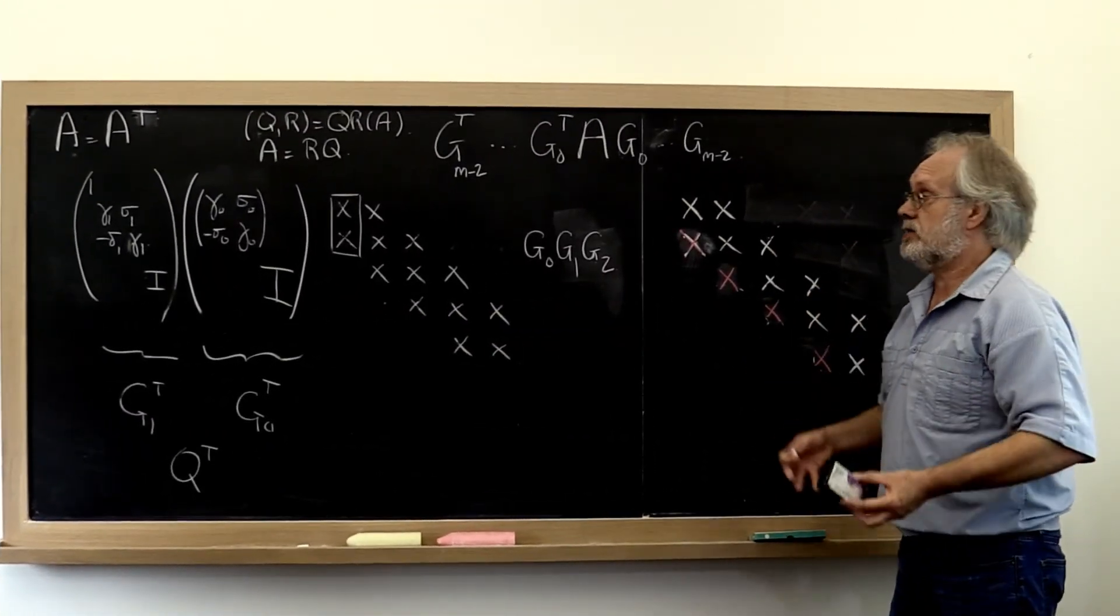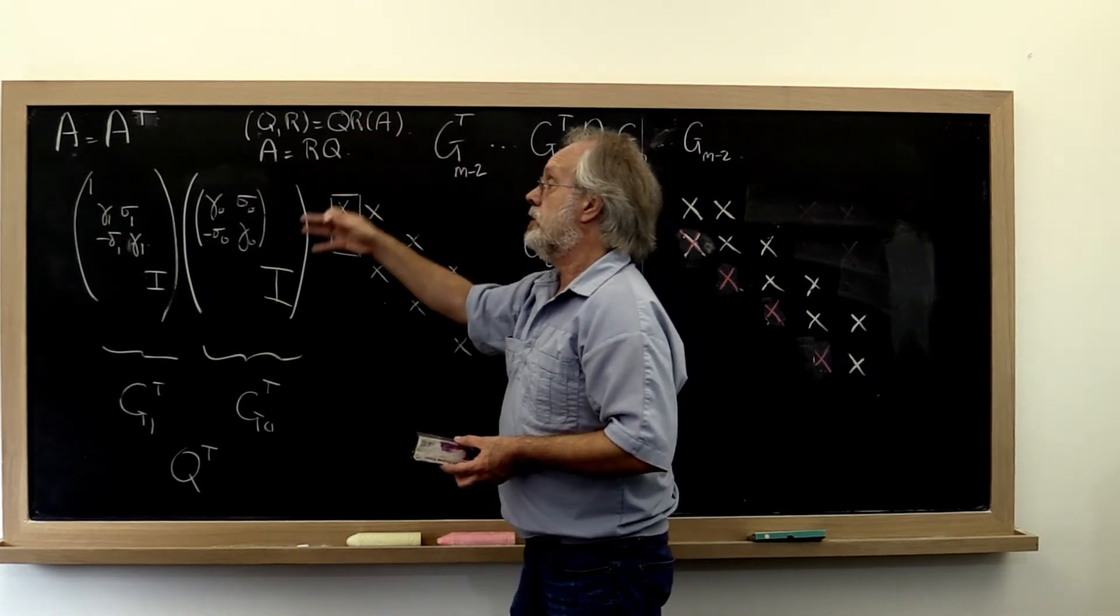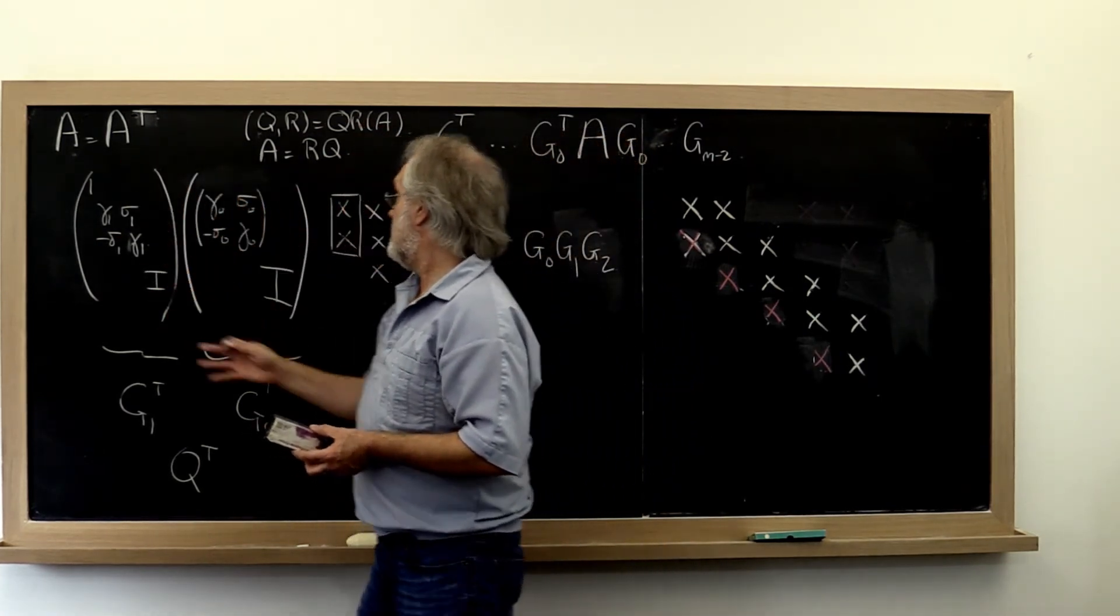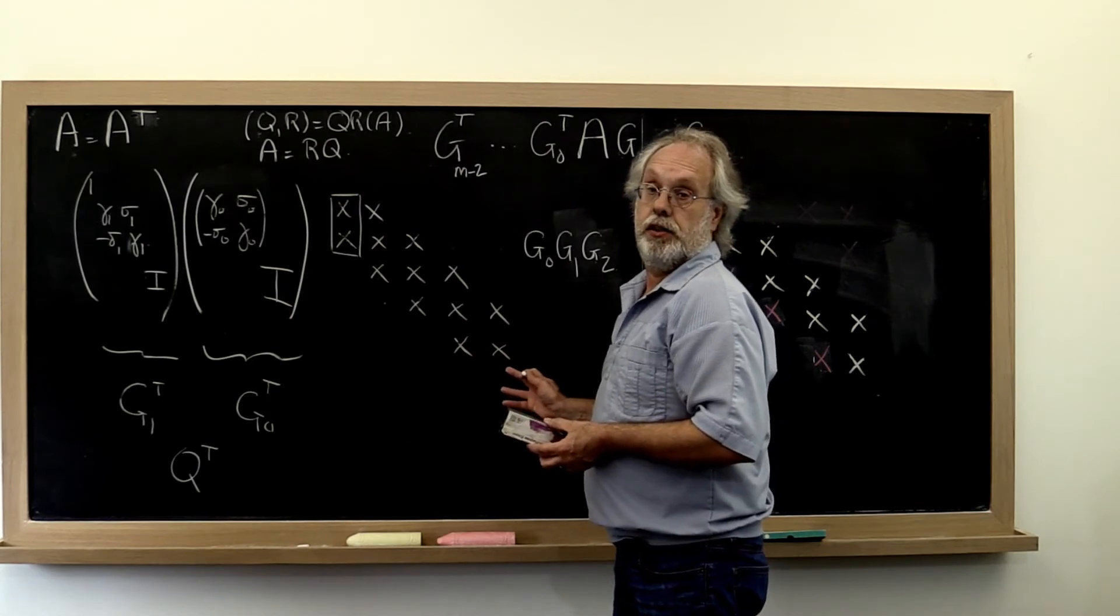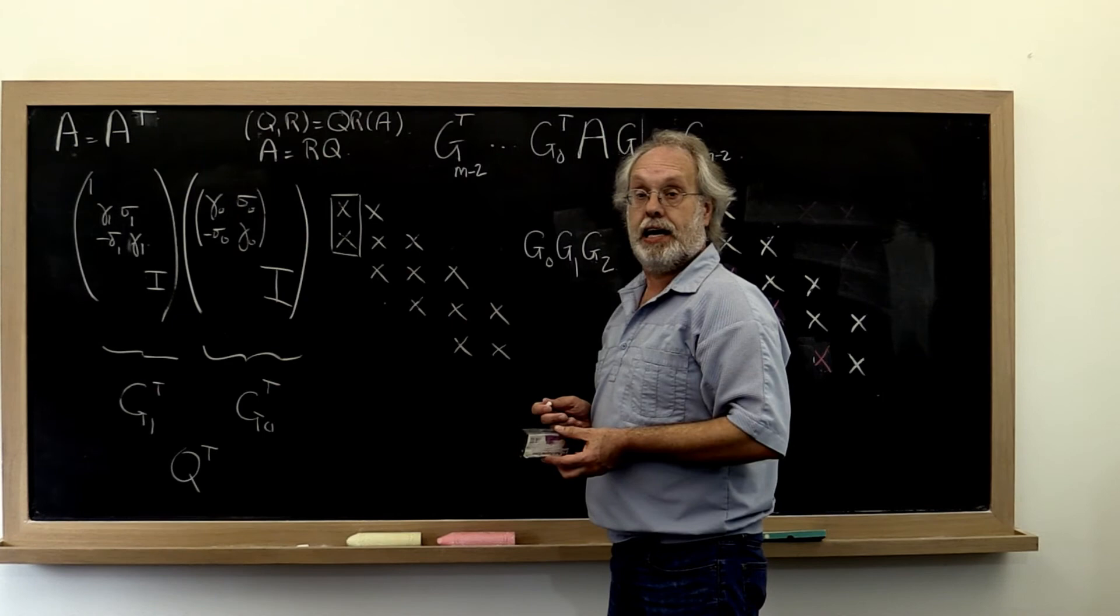What we notice now is, if we apply the QR algorithm to a symmetric matrix that is tridiagonal, then every iteration again produces a tridiagonal matrix.